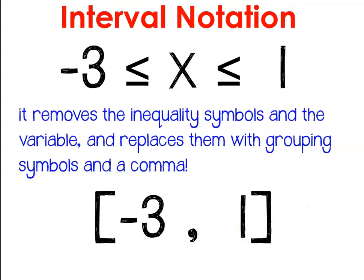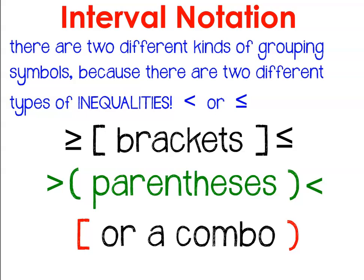So here are some of these grouping symbols that we would use. There are two kinds, because there are two kinds of inequalities. Those that are around a number or equal to a number. So if you are greater than or less than or equal to, you're going to use brackets.